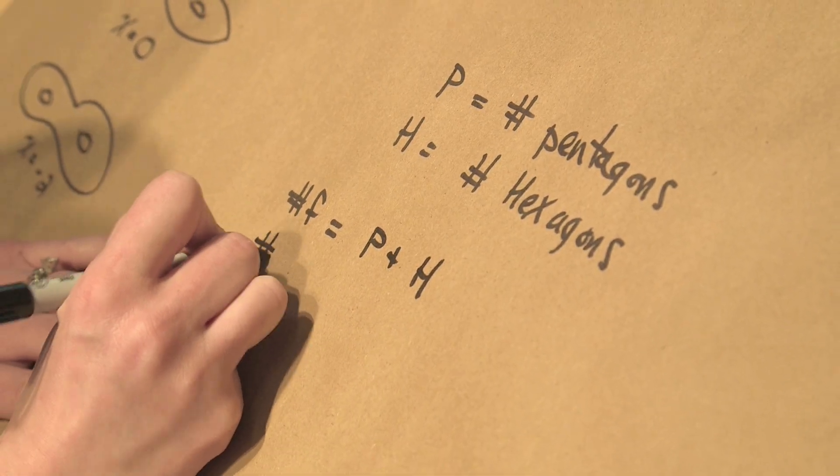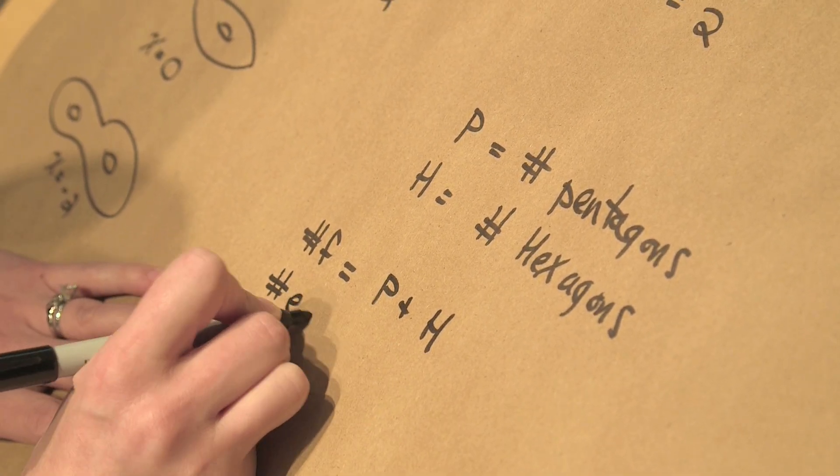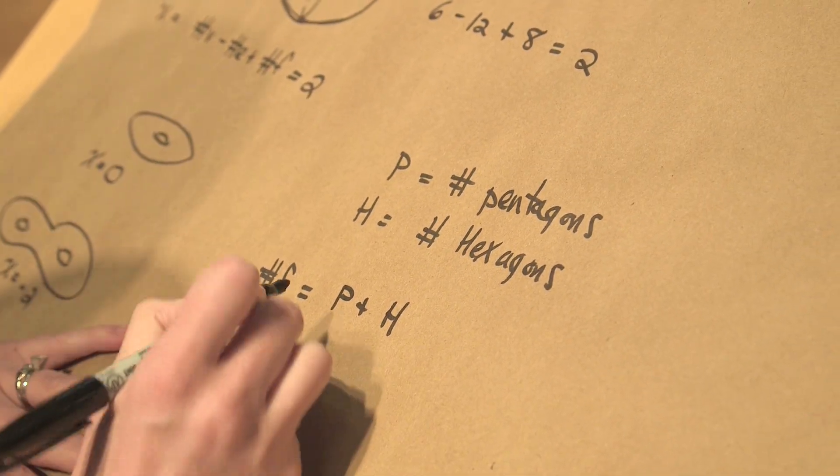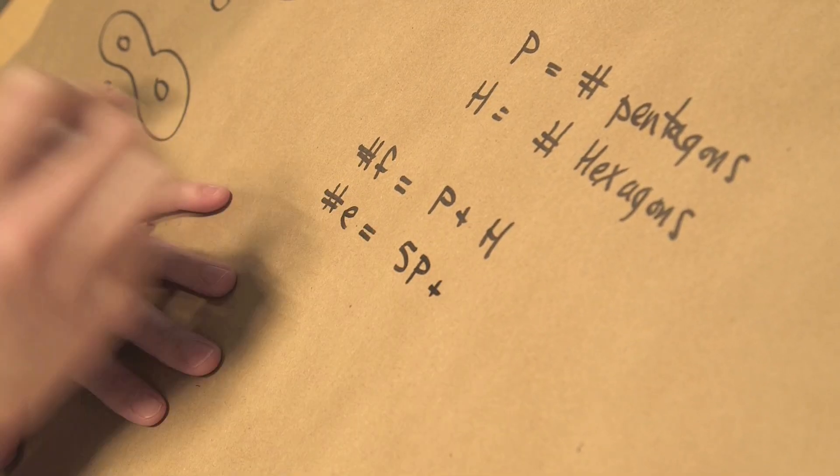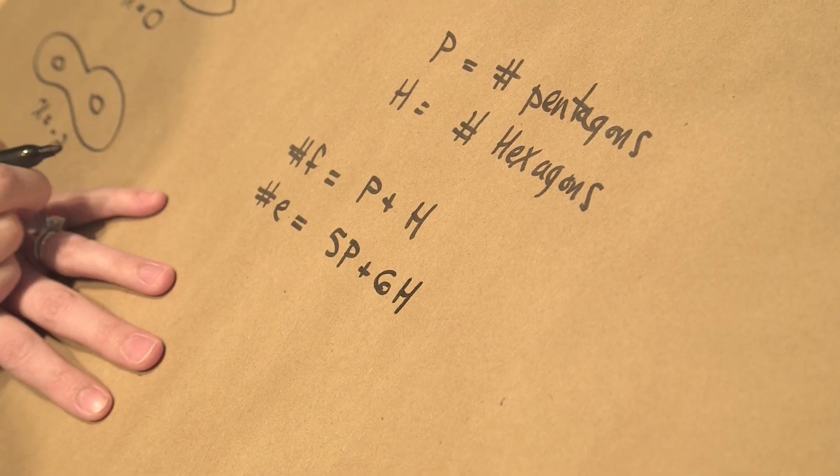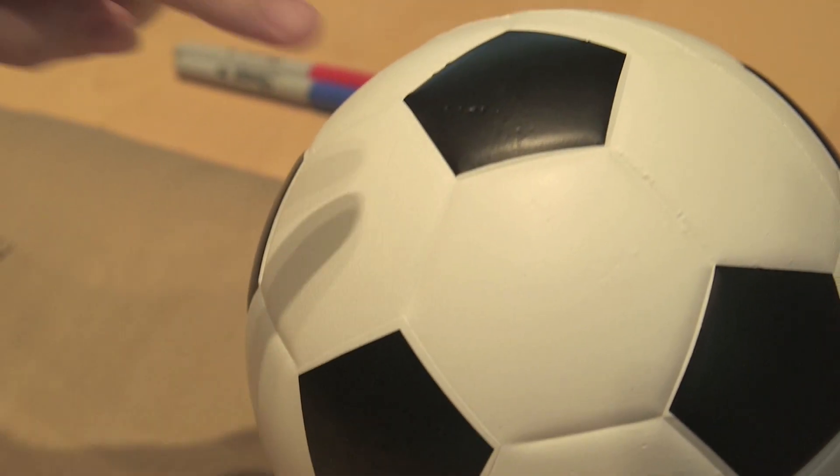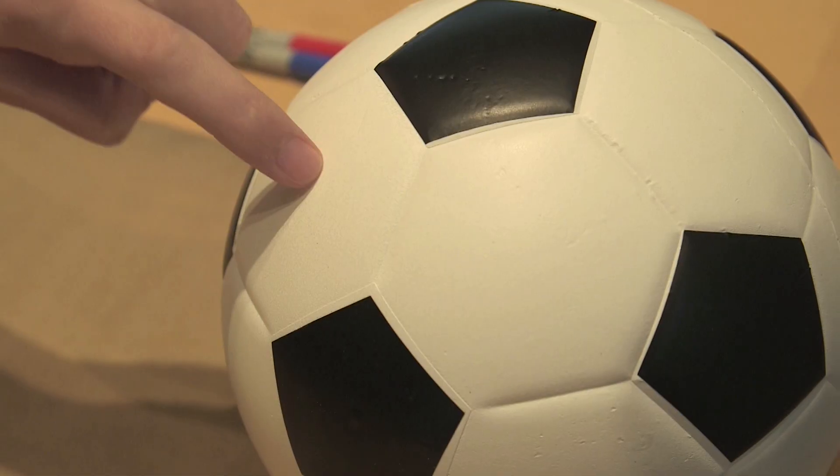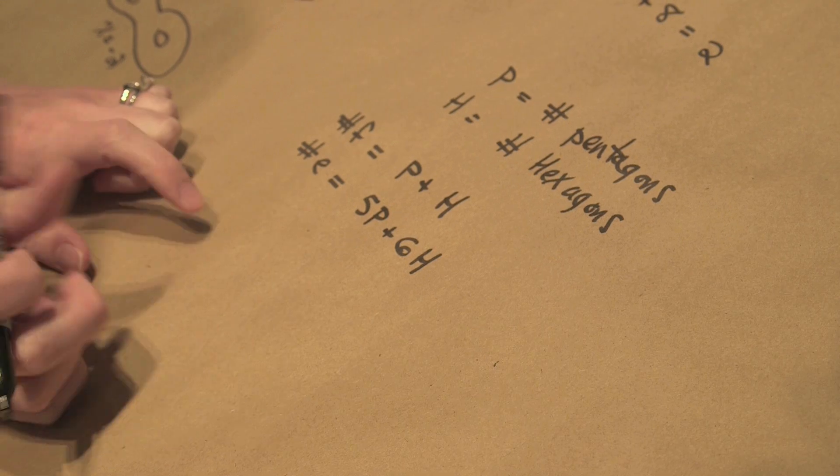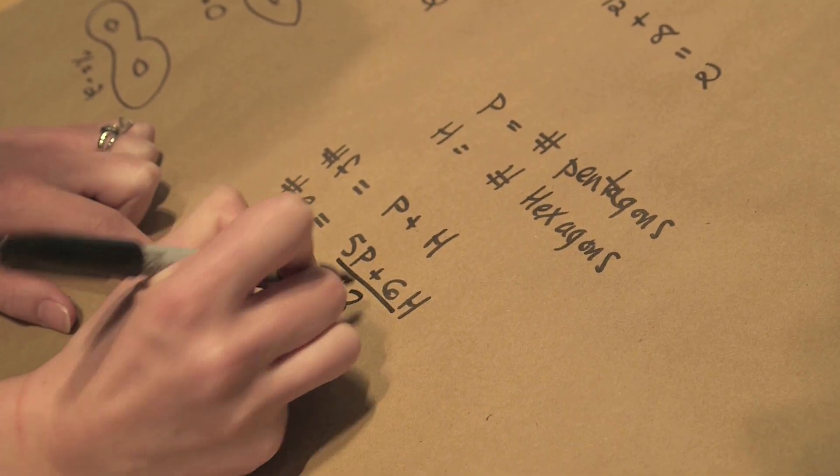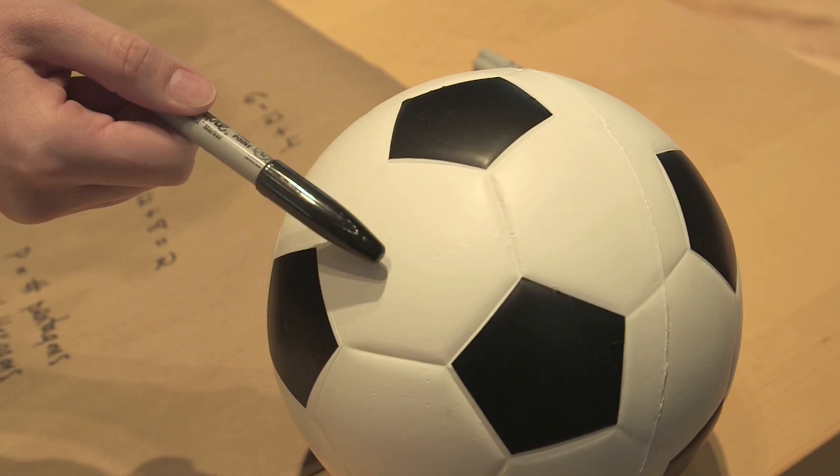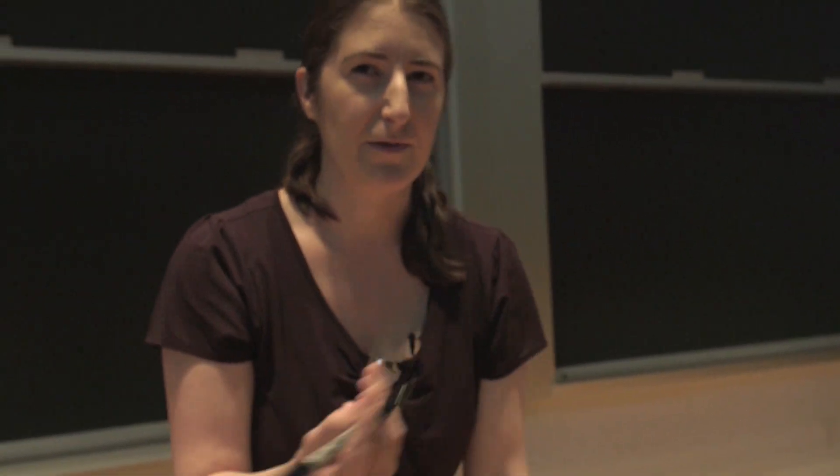So now let's count the number of edges. So to do this, we need to remember a pentagon has five sides, right? So for each pentagon, we get five edges. A hexagon has six sides. So for each hexagon, we get six edges. That total is not quite right though, because if you look at one of these edges on the soccer ball, it's actually on two different faces. So when we did this count, we counted all of the edges twice. So we need to divide the total by two to get the actual number of edges. Because like this edge is on a pentagon and a hexagon, this one's on two hexagons. But every edge is on two different faces. So we over counted.